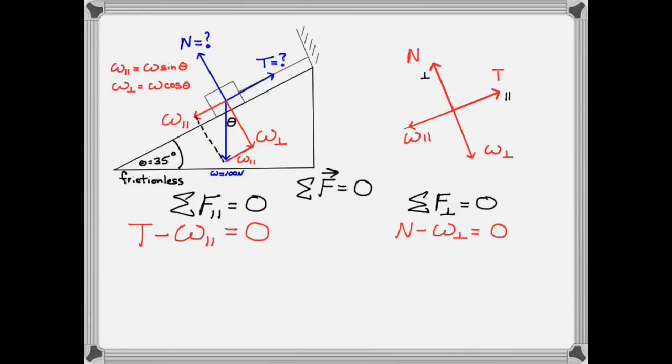It should be evident from the component diagram and the equations that the rope only has to support part of the weight of the box. Also the normal force only has to balance part of the weight not the entire weight as it would if the box was on a horizontal surface.